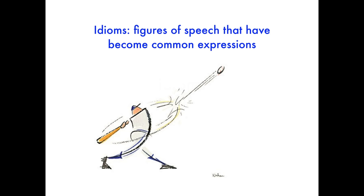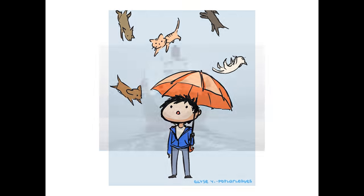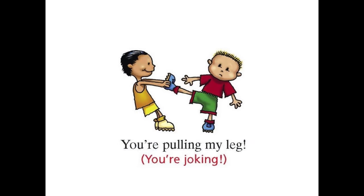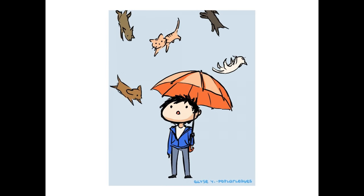Idioms are just expressions that make sense if you're familiar with the language. They're metaphors, similes, and other figures of speech that have become common expressions. Like if you were to say, he hit it out of the ballpark — someone unfamiliar with our language might assume you were talking about baseball, when you were actually just using a familiar metaphor to say someone did something really well. Other idioms are: it's raining cats and dogs, that ship has sailed, and you're pulling my leg. If you're from another country, you'd be like, what? It's raining cats and dogs — what are you talking about? Idioms can also be clichés, overused expressions which should be avoided, but they can also be a lot of fun if used well.